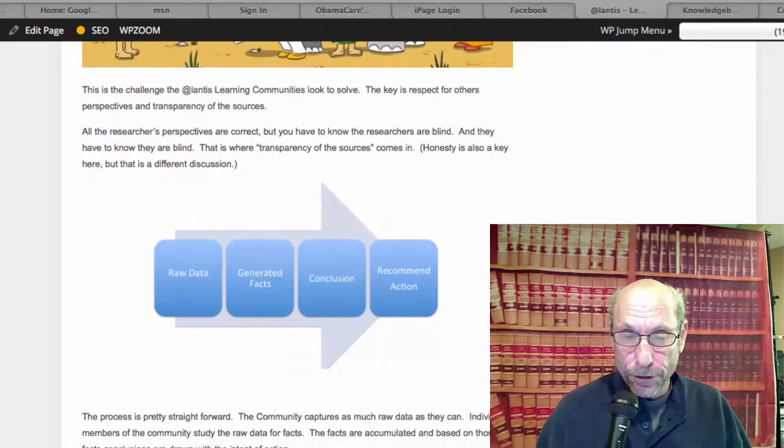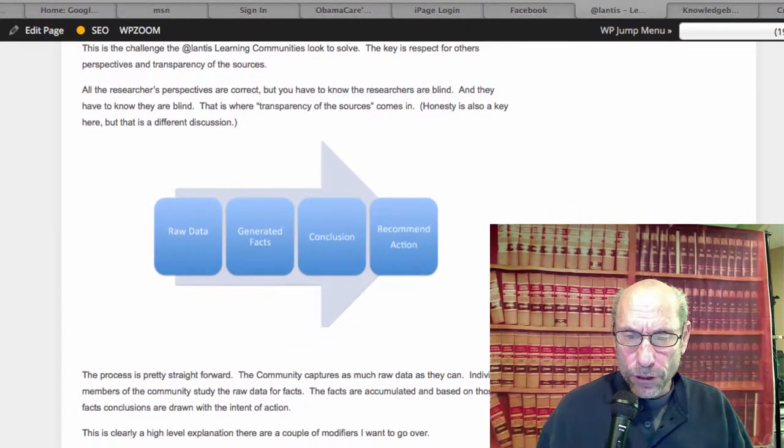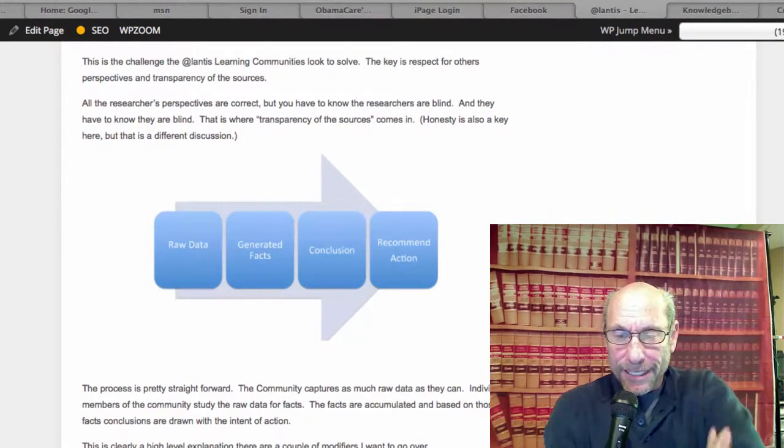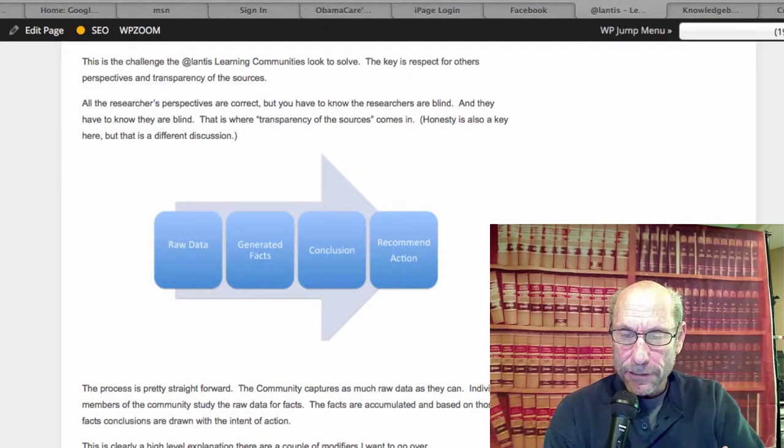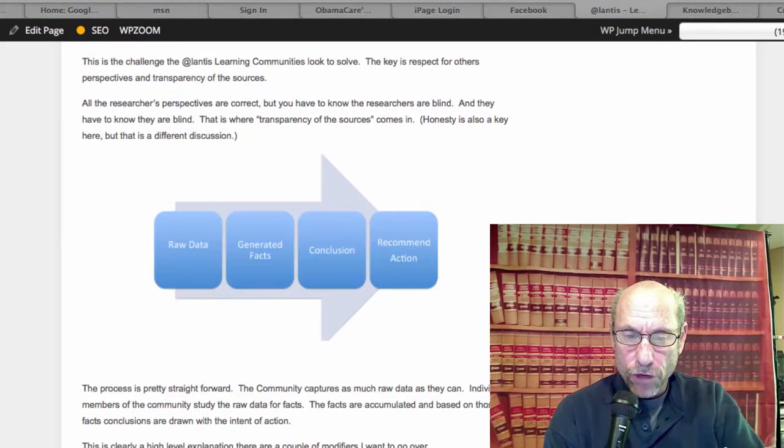So this process is pretty straightforward. The community captures as much raw data as it can. Individual members of the community study the raw data for facts. The facts are accumulated, and based on those facts, conclusions are drawn with the intent of action.